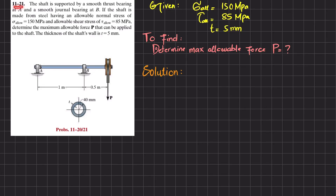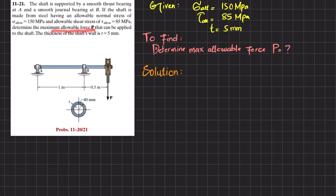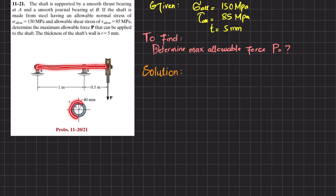Welcome back. Problem 11-21: the shaft is supported by a smooth thrust bearing at A and a smooth general bearing at B. The shaft is made from steel with allowable normal stress of 150 MPa and allowable shear stress of 85 MPa. Determine the maximum allowable force P that can be applied. The shaft is a hollow pipe with outer radius 40 mm and wall thickness 5 mm, with a concentrated load at point P.